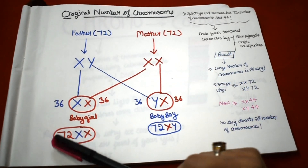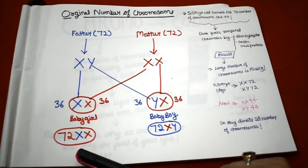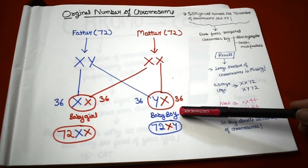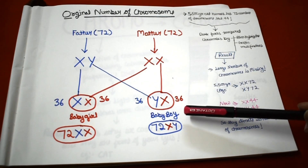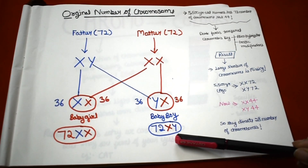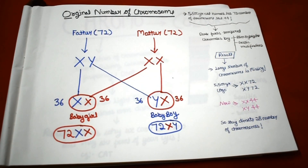When they met, the baby girl received X from the father's side and X from the mother's side — 36 chromosomes from the father and 36 from the mother — so the total was 72 plus XX. The baby boy received Y from the father's side and X from the mother's side, also totaling 72 plus XY. So the real, original number of chromosomes in a human being five thousand five hundred years ago was 72 autosomal chromosomes, not 44.